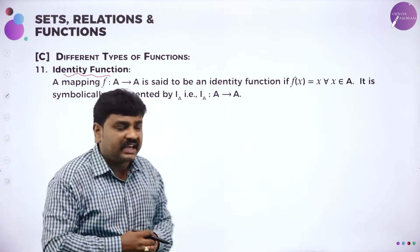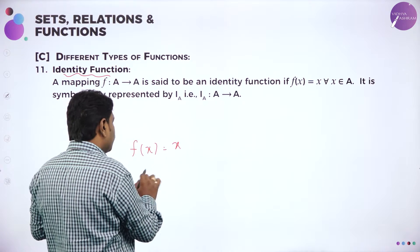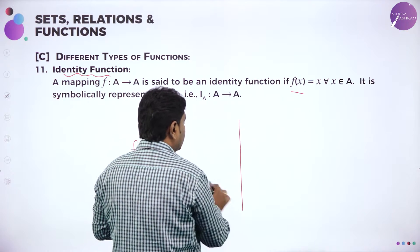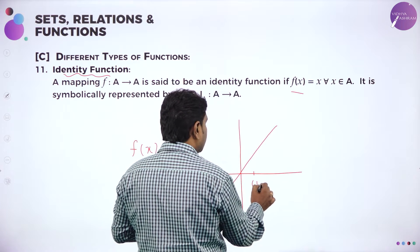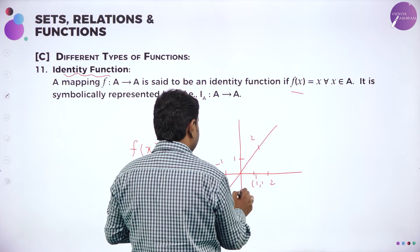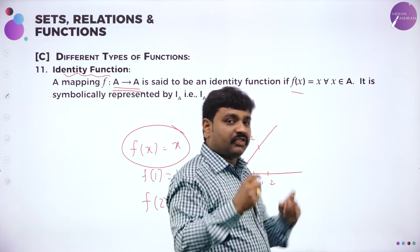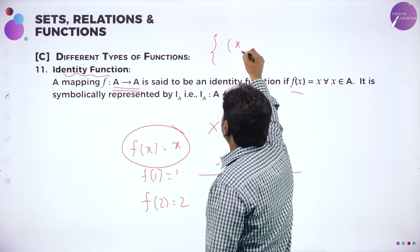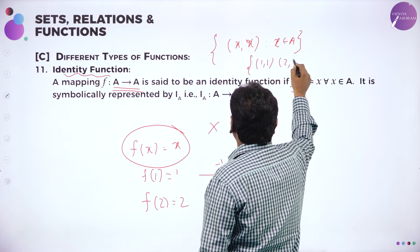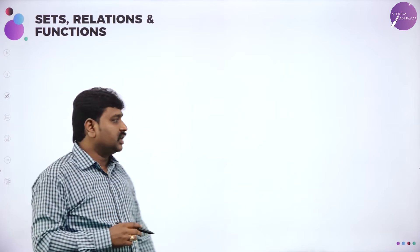Now, identity function. What is identity function? f maps A to A — domain and codomain both are the same. f of x equals x means f of 1 is 1 itself, f of 2 is 2 itself — we call it as identity function. F of x equals x is called identity function. If you draw a graph for this you get a straight line, because x and y values are the same: (1,1), (2,2), (minus 1, minus 1) and so on. The order pairs will be in the form (x, x) such that x belongs to A.